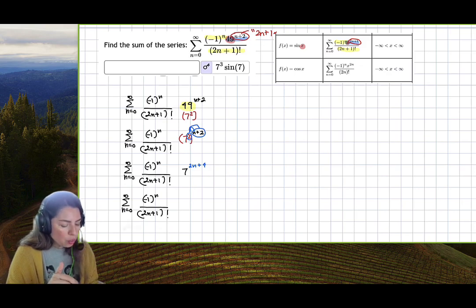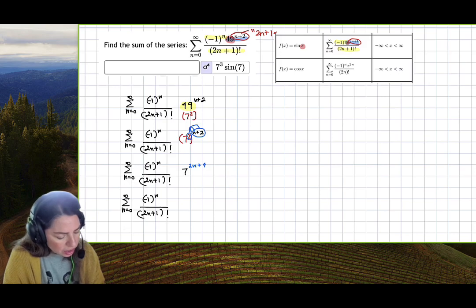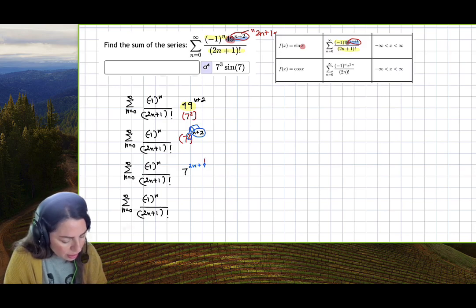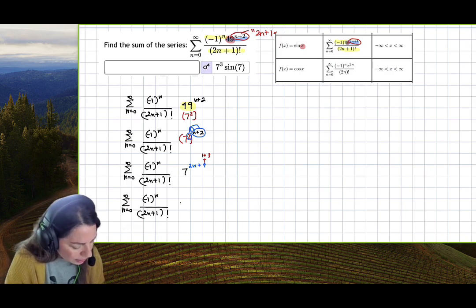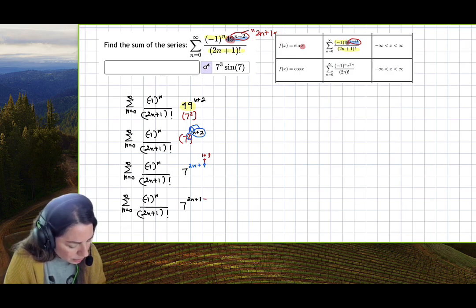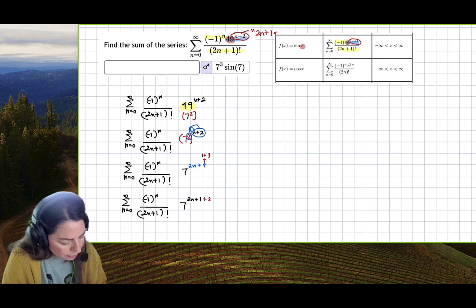I know that 4 is just 1 plus 3. So I could rewrite this as 7 to the 2n plus 1 and then 3 in the back. Why? Well, I can use the property of exponents.